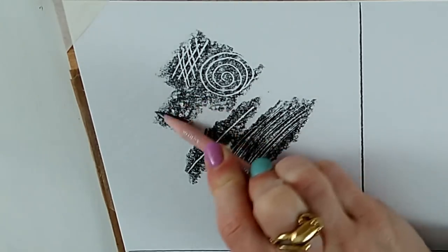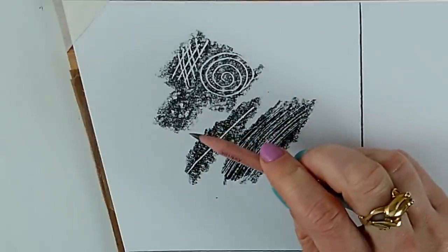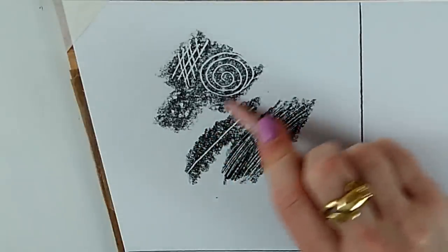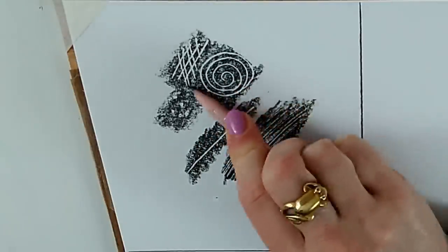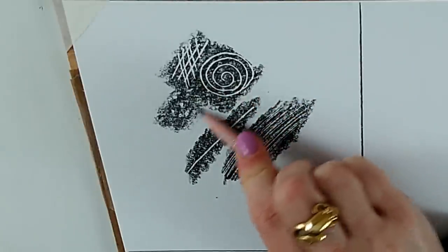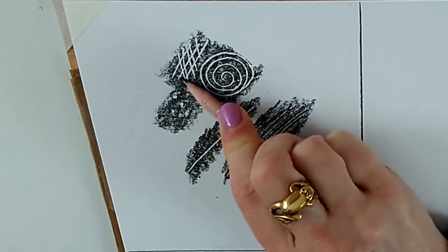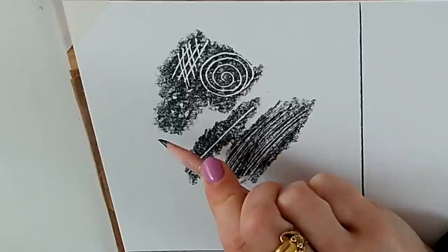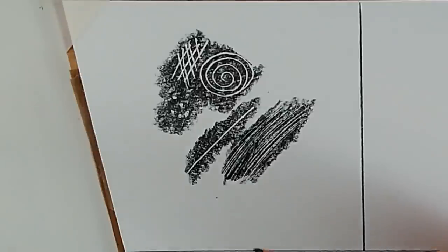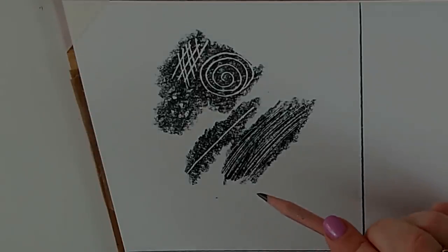Bear in mind that I'm on a watercolor paper here because we're going to be using some paint later on. So on a cartridge paper, that's a smooth sketching paper, we tend to call it cartridge paper in the UK, you'll get even more of a filled in effect. You're getting a little bit of a gappy effect on this paper because it's got a bit more texture to it. But I think you can see the amazing effects we can get with our embossing tool and graphite pencil.